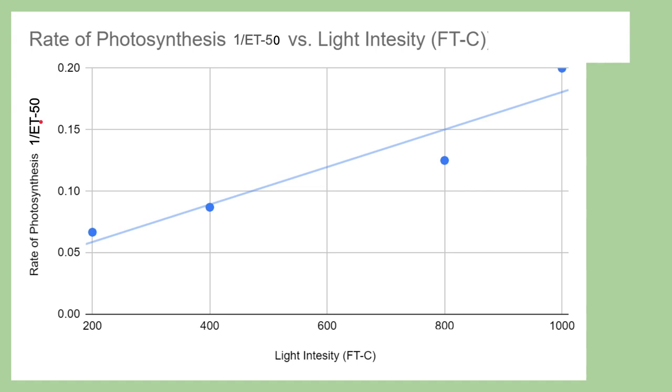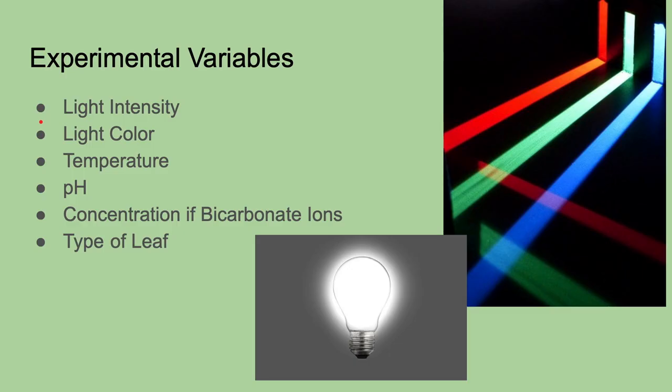So what kind of experiments can you do with this? You can change the light intensity, like I just showed you. You could change the light color. For example, the photosystems inside the chloroplasts, the thylakoids in the chloroplasts are going to be absorbing different wavelengths of light. They're going to be absorbing the reds and the blues and reflecting the greens. So you can see that in an experiment. That's a pretty cool one to do. You can change the temperature, pH, concentration of bicarbonate ions, or even the type of leaf.